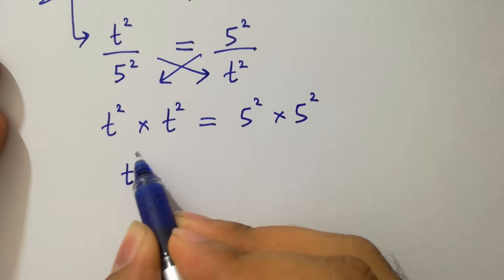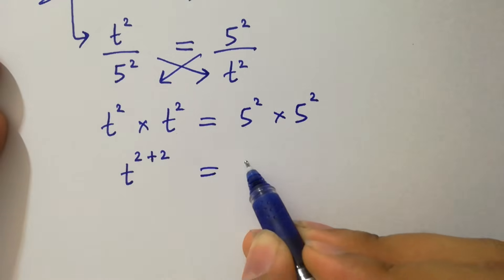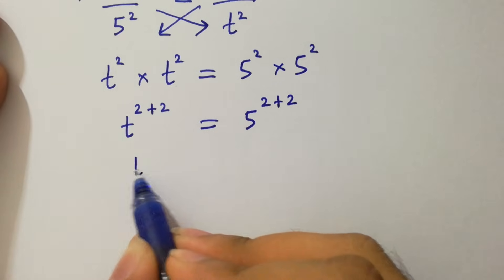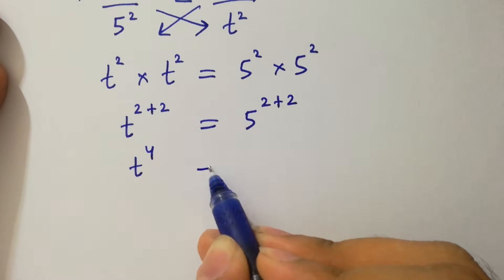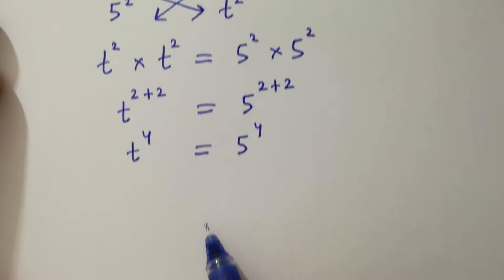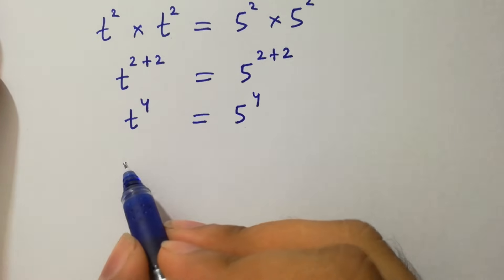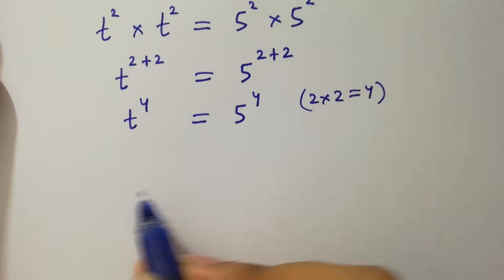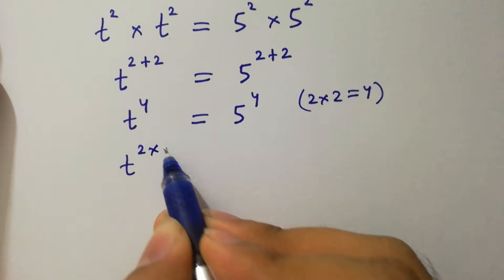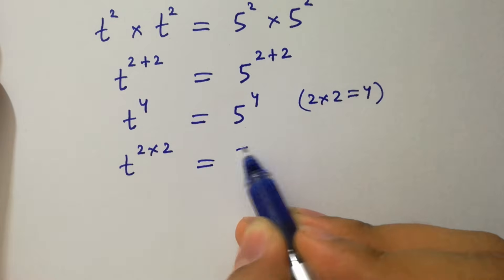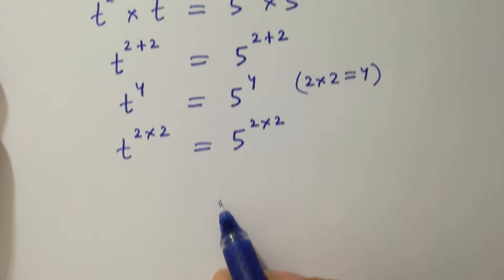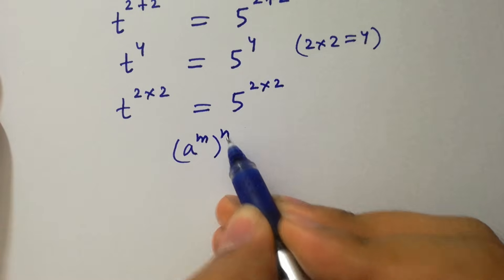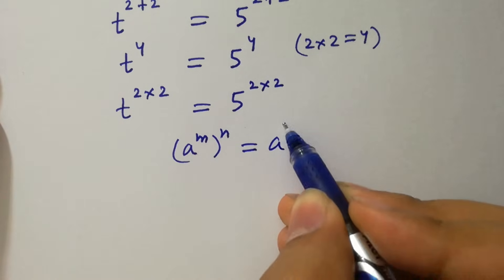Applying the rule aˣ · aˣ, it will be t to the power 2+2 equals 5 to the power 2+2. Since 2+2 is 4, we have t⁴ equals 5⁴. Since 2 times 2 equals 4, it will be t^(2×2) equals 5^(2×2).